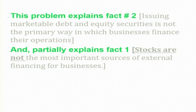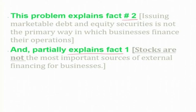This problem explains Fact Number 2 — the primary way in which businesses finance their operations. Because of asymmetric information and the resulting adverse selection problem, issuing marketable debt and equity securities is not the primary way in which businesses finance their operations. It also partially explains the fact that stocks are not the most important sources of external financing for businesses, because in the equity market firms with high expected profit and low risk won't be getting the expected IPO price corresponding to their good standing.